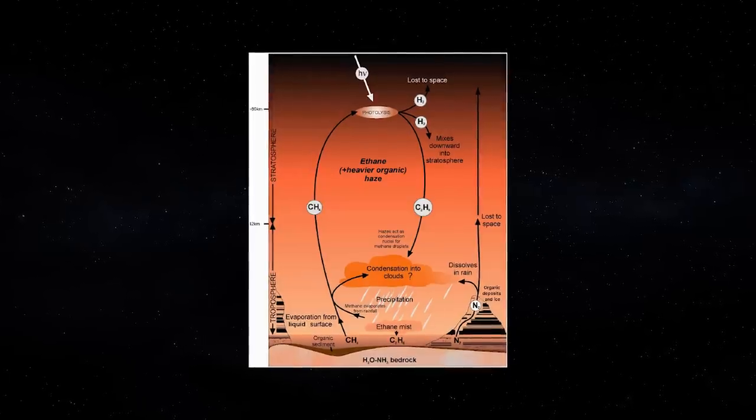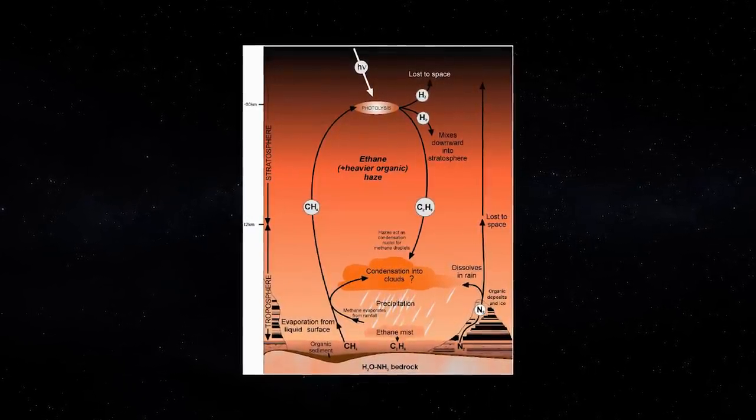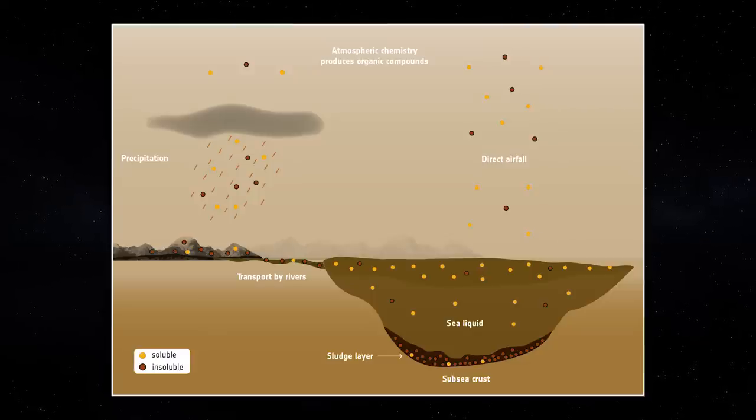The sinking gases, a mixture of smog-like hydrocarbons and nitrogen-bearing chemicals called nitriles, encounter colder and colder temperatures on the way down.